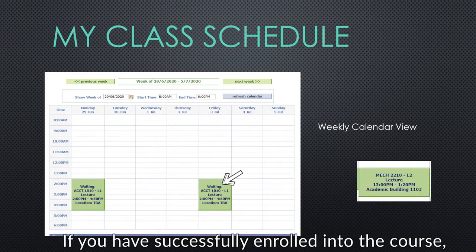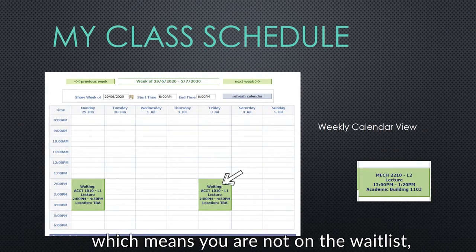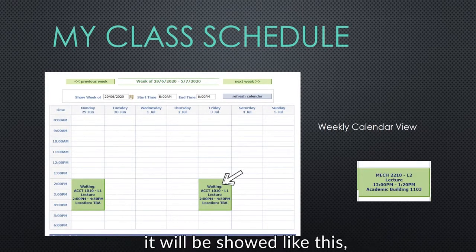The word 'waiting' here means that you are still waiting on the waitlist. If you have successfully enrolled into the course — meaning you are not on the waitlist — it will be shown like this without the word 'waiting'.